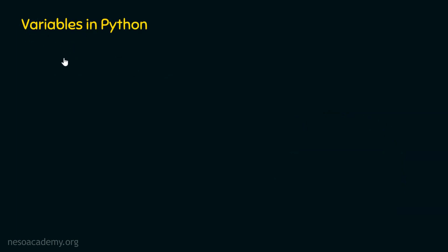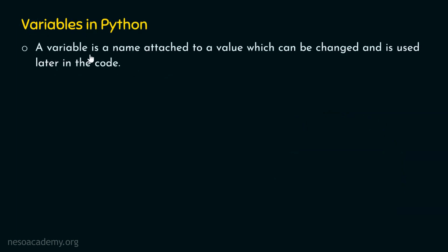What is a variable? A variable is a name attached to a value which can be changed and is used later in the code. A variable is simply a name attached to a value. We can change the value of a variable later in our code, and we can use the name instead of a value in our code. Instead of using the value directly, we can use the name associated to that value.